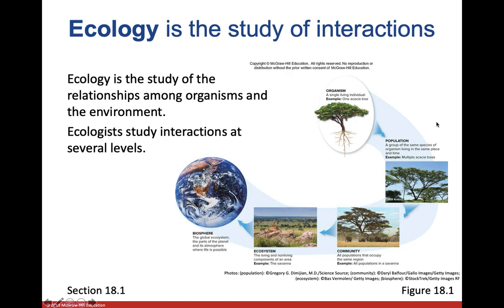If you recall from Biology 1010, the biological levels of organization — organism, population, community, ecosystem, biosphere. Somebody that studies this stuff is called an ecologist. You have ecologists that study individual organisms, populations, communities, and ecosystems. All these different levels of biological organization are interconnected. Organisms make up the population, populations make up communities, and so on. Whatever happens at the lower levels impacts the bigger ones, and whatever happens at the big levels influences the lower ones.